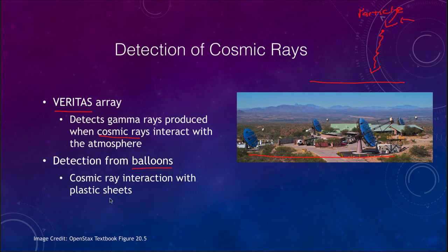We can also use balloons put up in the atmosphere with sheets of plastic that will interact with the cosmic rays, detect and catch them, and then use those to work backwards to learn more about what these cosmic rays are. Again, they are very difficult to study because they don't travel in straight lines, so we don't know exactly where they're coming from.